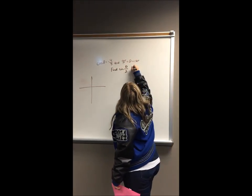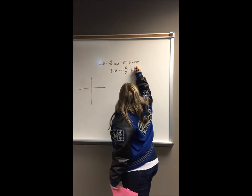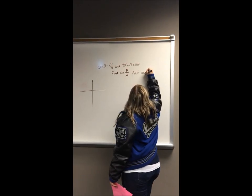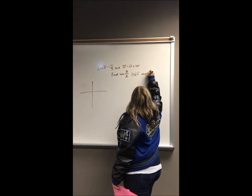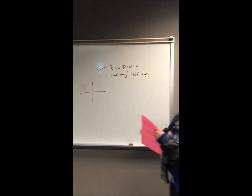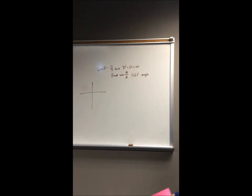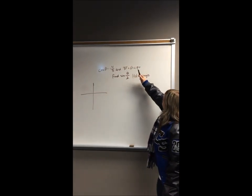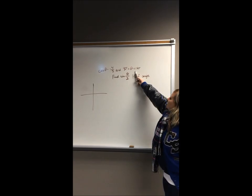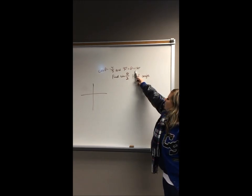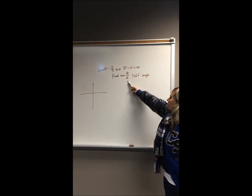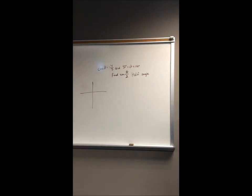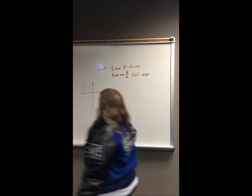For this problem, we're going to be finding the half-angle. They give us the cosine and the quadrant that the triangle is going to be in, and they want us to find sine of theta divided by 2. So first, we're going to draw our triangle.